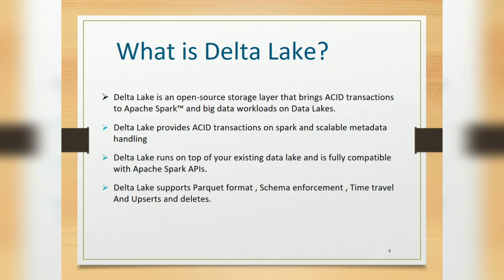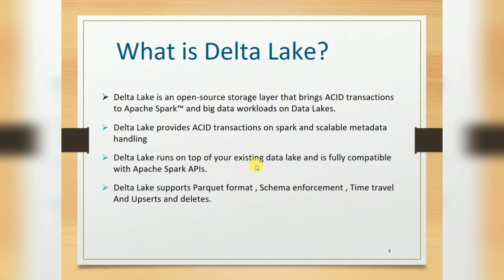Delta Lake provides ACID transactions on Spark and scalable metadata handling. A major issue in big data is metadata management, because of frequently changing source data fields, data types, and structured, semi-structured, and unstructured data. Delta Lake handles this very easily — it stores metadata as JSON files. Delta Lake runs on top of existing data lakes and is fully compatible with the Apache Spark API.